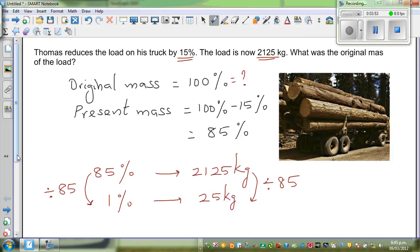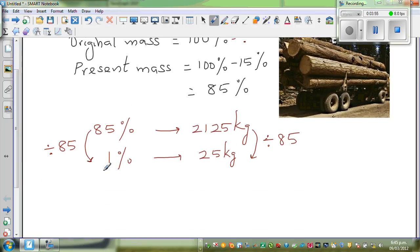Now from 1%, can I find 100%? So from 1%, I want to go to 100%. So I'm asking the question: 100% is how many times 1%? That is pretty easy. That is times by 100. So I do the same thing here. I have to times this by 100. So 100% is 2500 kg.